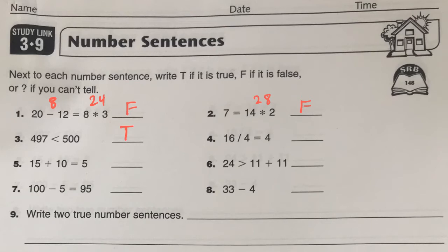The only tricky part might be 33 minus 4. That is not a number sentence. So we write question mark. We can't say if it's true or false.